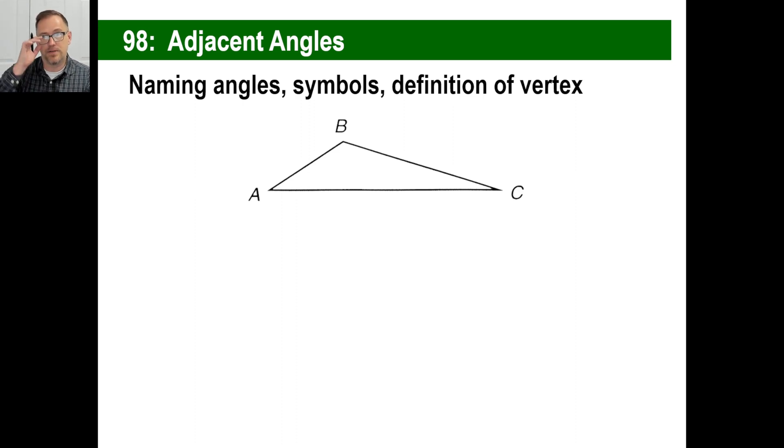Now naming angles. This is a triangle. You can name this, let's say we're talking about this angle here. If it doesn't share anything with any other lines or angles, you can just say angle B and everybody knows what you're talking about. Same thing for angle C, we all know what you're talking about. Angle B, angle A. Yeah, we know what you're talking about.